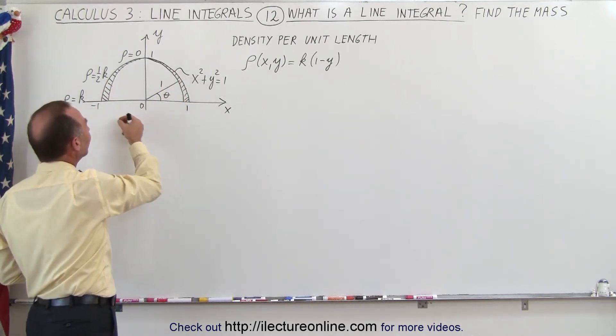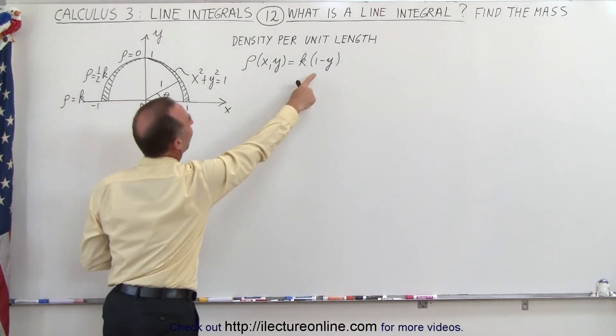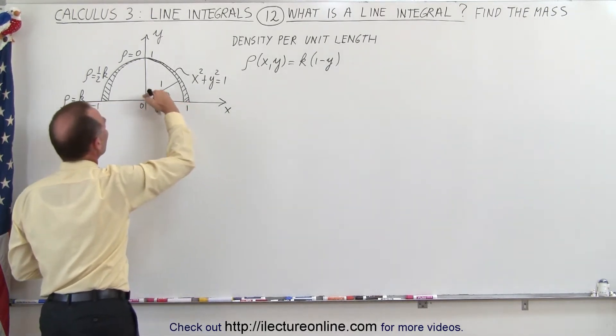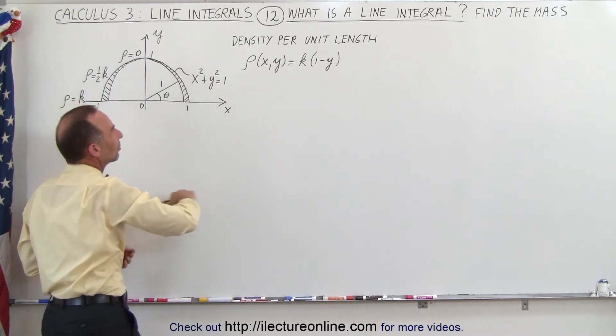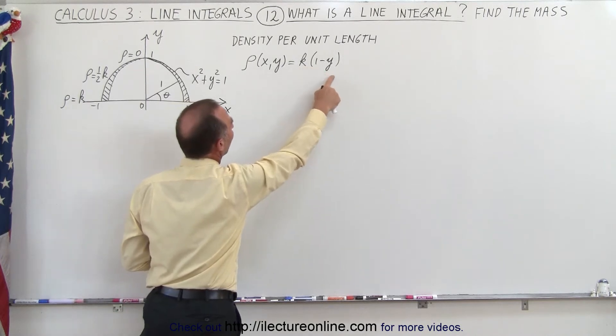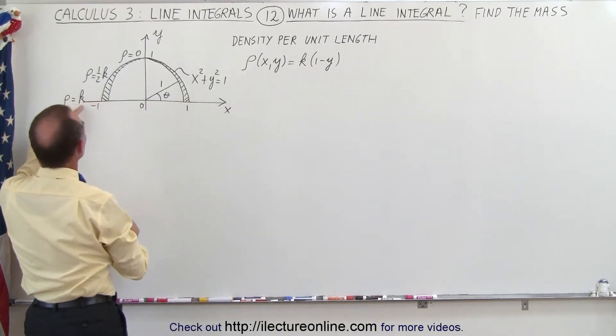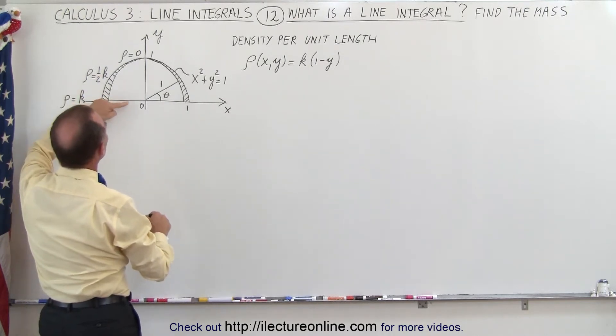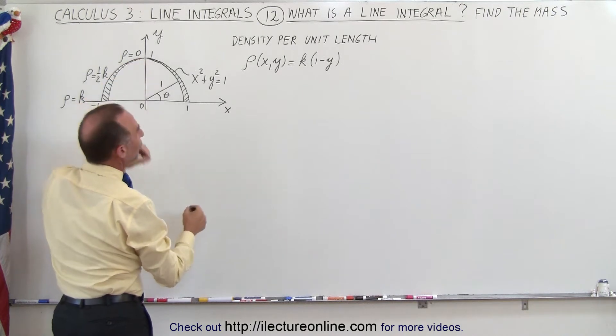Notice that the density of the wire has a function which depends on y. In other words, the farther away we are from the x-axis, the less dense. The closer we are, the greater the density, and is defined as k times 1 minus y, which means at the x-axis, the wire has a density equal to k. Halfway from 0 to 1, it's half k, and all the way at the very top, the density goes to 0.